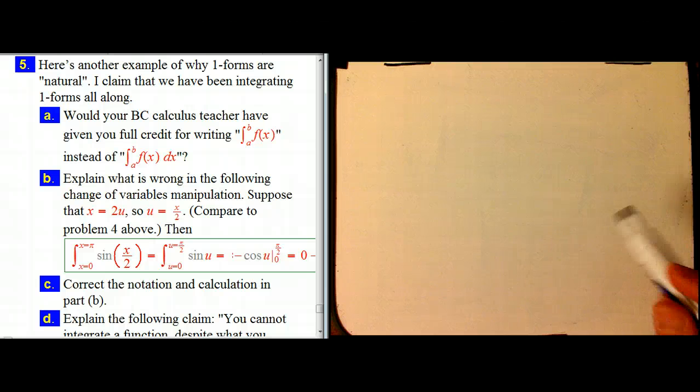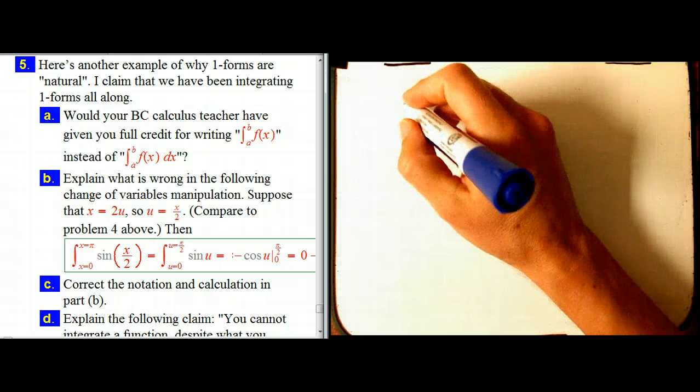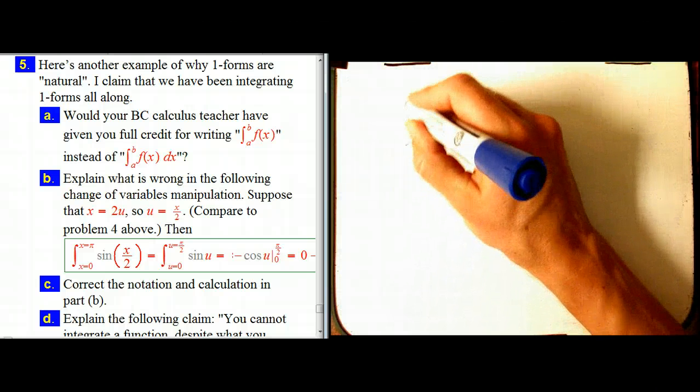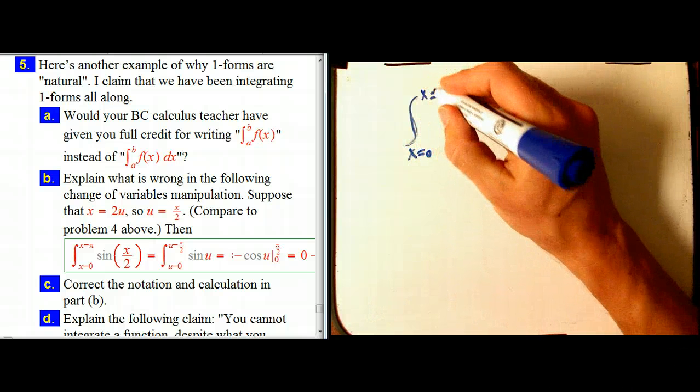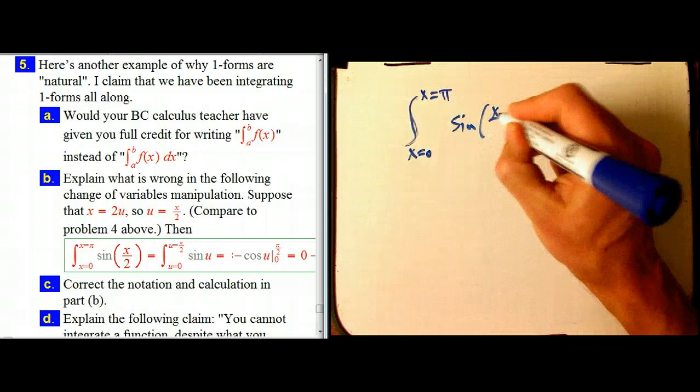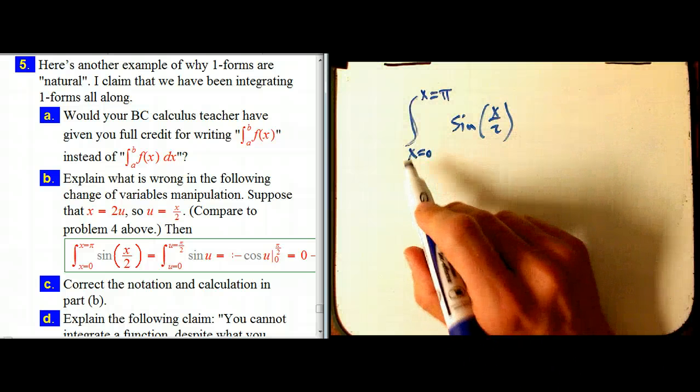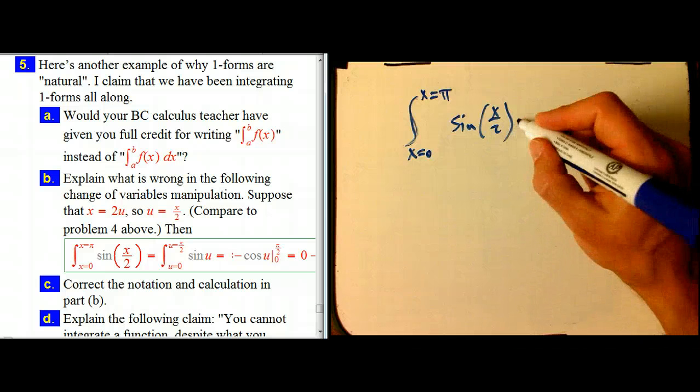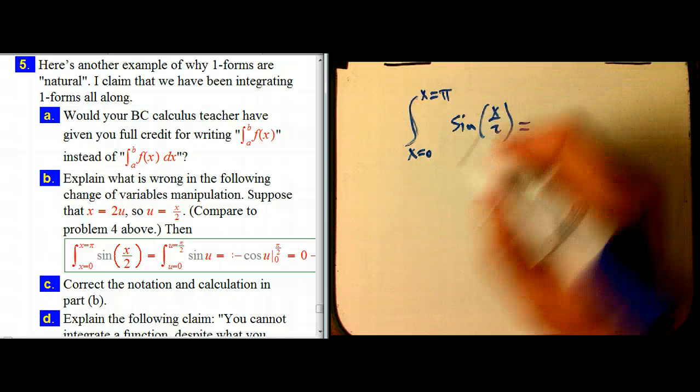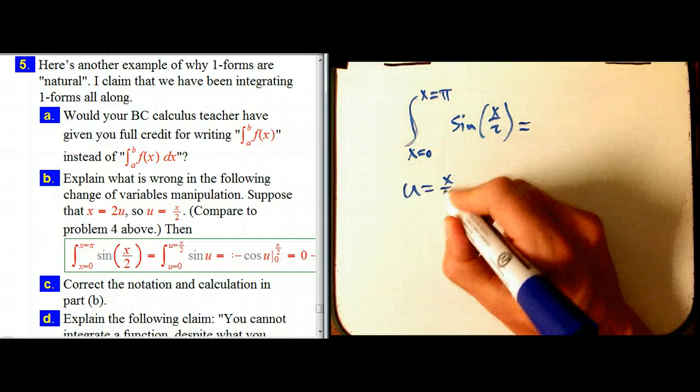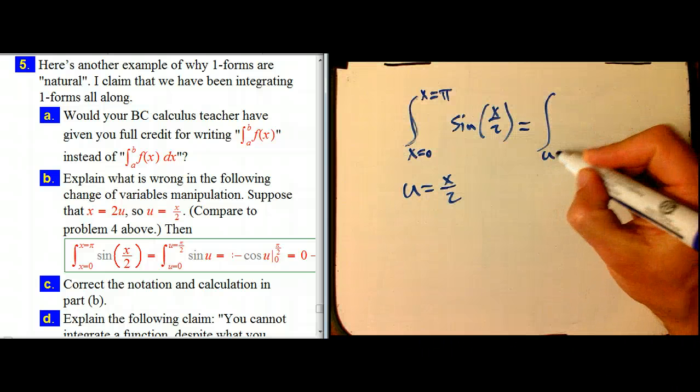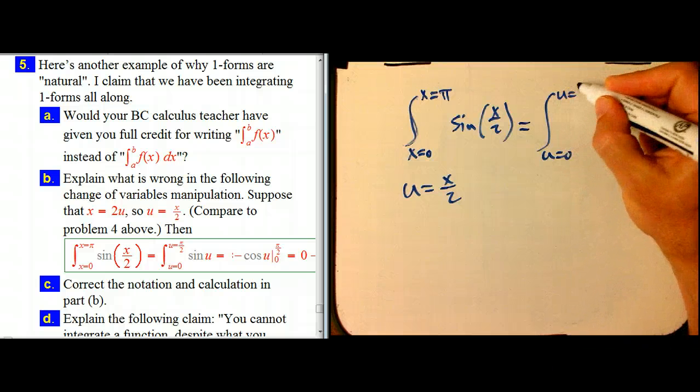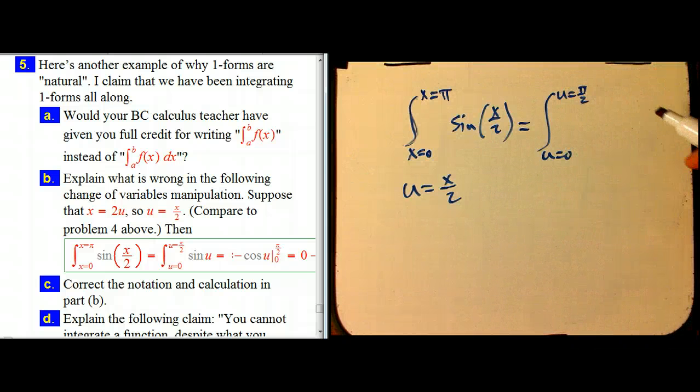Pause the video if you want to do this yourself. A student tries to integrate, and they're very careful about change of variables, atypically careful, except for one thing. They've got this integral from x equals 0 to x equals π. And we're going to use a change of variables, use u equals x over 2 as our change of variables. Then u is going to go from 0 to π over 2, because u is just x over 2. So at least they remember to change the limits. That's crucial.